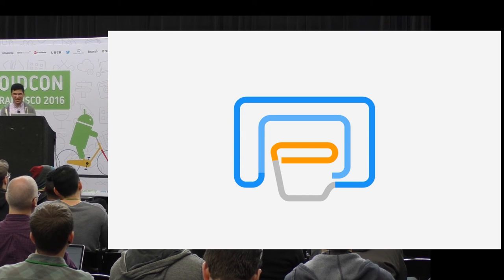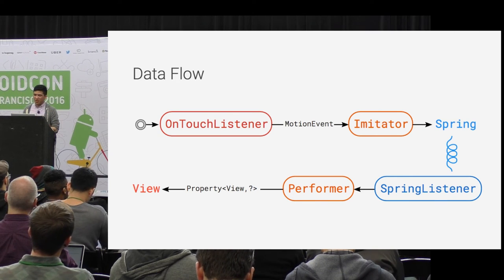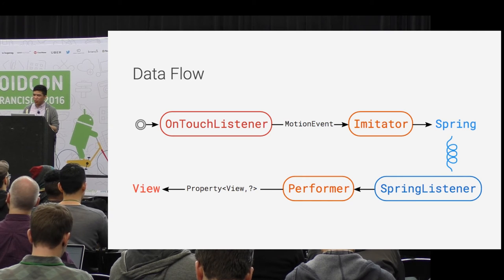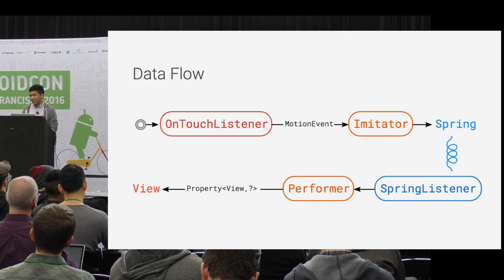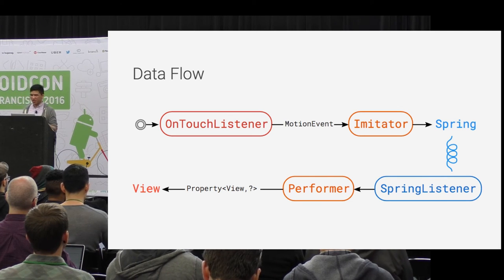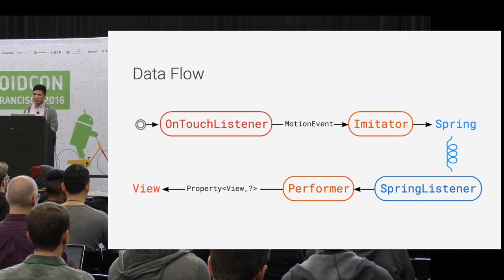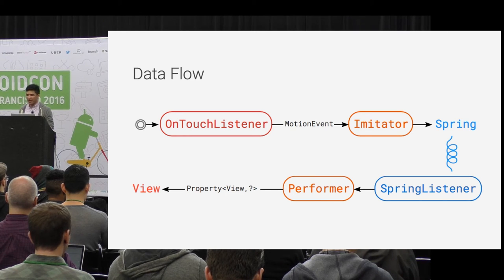There weren't any names for those concepts of mapping from a touch listener to a spring and then a spring to a view. Going from a motion event to a spring, I call it an imitator - the spring is imitating the motion of the motion event. The performer takes the current value of the spring and maps that to a view property.